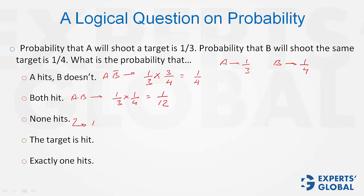Neither hits is A bar into B bar. A is 1 by 3, so A bar is 2 by 3. B is 1 by 4, so B bar is 3 by 4. The answer is 1 by 2.